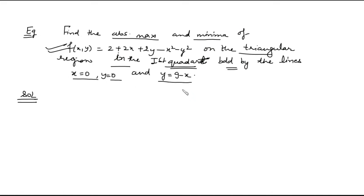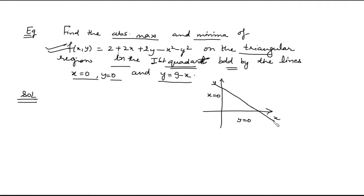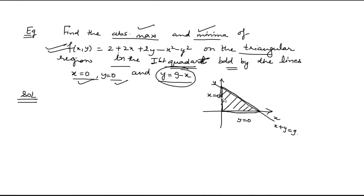In these types of questions, we first draw the region. The region here is bounded by the line x=0, the line y=0, and the line x + y = 9. In the first quadrant, this triangular region is where we find the absolute maxima and minima of the function.